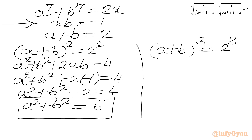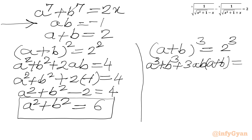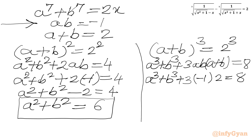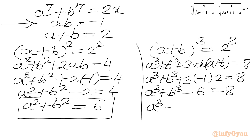Now cubing: (a + b)³ = 2³ = 8. So a³ + b³ + 3ab(a + b) = 8. We can write a³ + b³ + 3(−1)(2) = 8, which gives a³ + b³ − 6 = 8. Adding 6 to both sides, we get a³ + b³ = 14.